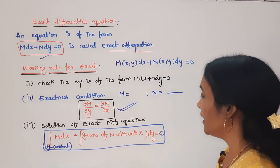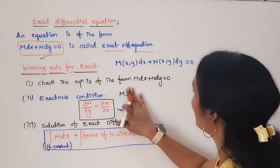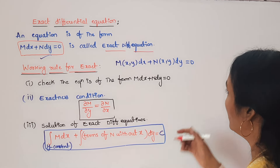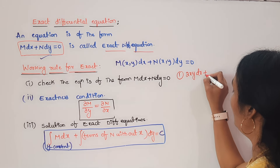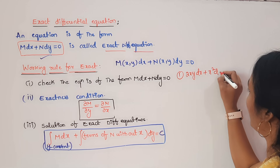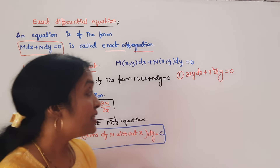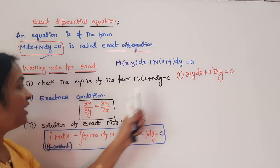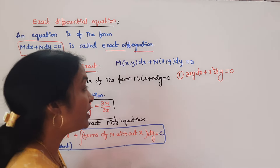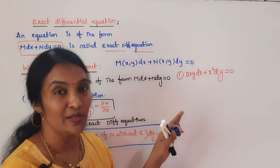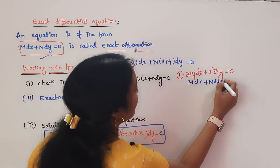Now I will give one small example. Consider the equation 2xy dx plus x² dy. This looks like MDX plus NDY. Check the working rule: the equation is of the form MDX plus NDY equal to 0.